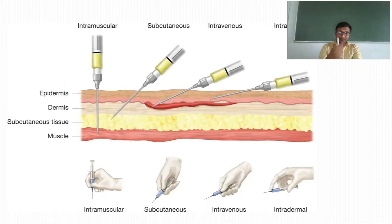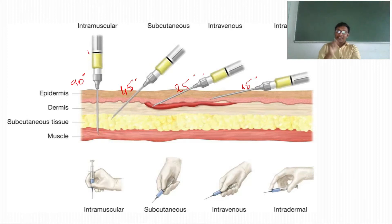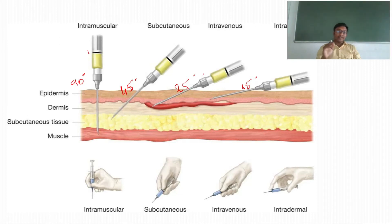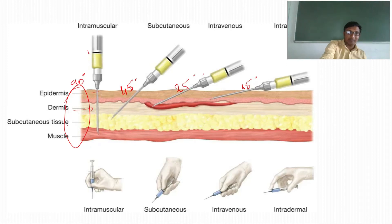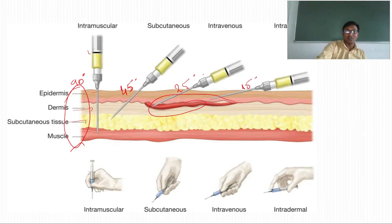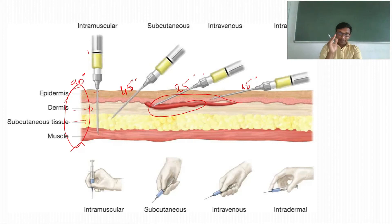As you can see in the picture, when giving an intradermal injection, we go at an angle of 15 degrees. For intravenous, since veins circulate just below the epidermis, we go at 25 degrees. For subcutaneous, the angle is 45 degrees. For intramuscular, we go directly at 90 degrees. The skin layers are: epidermis, dermis, subcutaneous tissue, and muscle tissue. The vein is most probably in the dermis, also touching the lower epidermis.